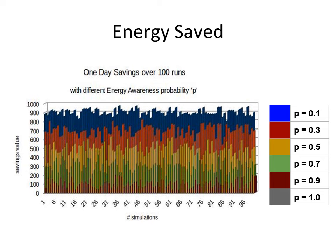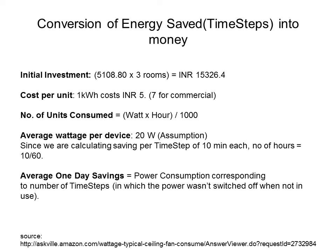This is the energy profile obtained after running the simulation 100 times with different values of p. Savings refers to those time steps in which the user forgets to switch off their device while leaving the room. As we can see, for lower values of p the energy saved is quite high compared to higher values of p. In this slide we see how those time steps convert into money, using the initial investment, cost per unit, number of units consumed, and average wattage per device.